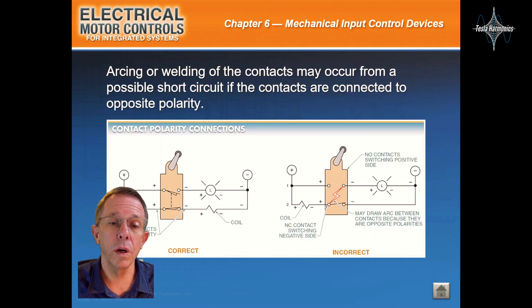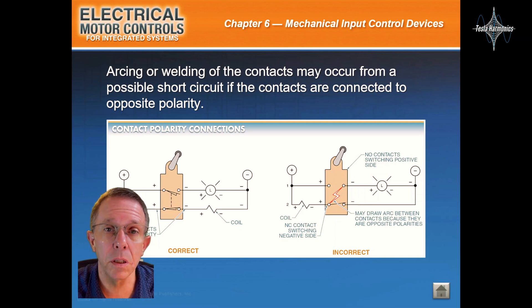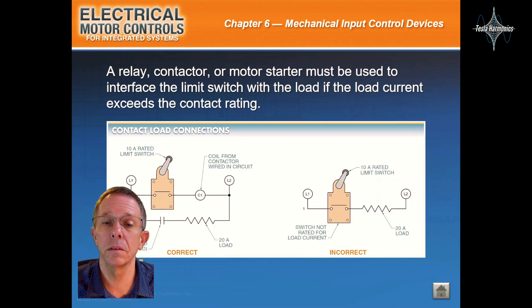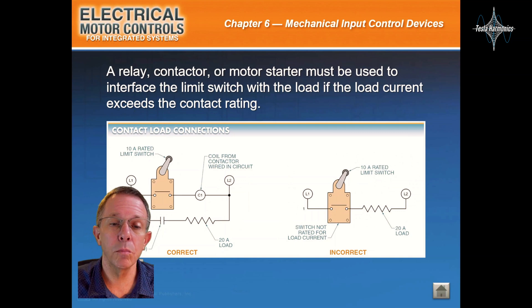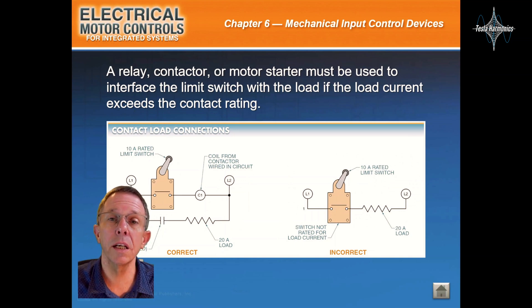Arcing or welding of the contacts may occur from a possible short circuit if the contacts are connected to the opposite polarity. A relay, contactor, or a motor starter must be used to interface the limit switch with the load if its load current exceeds the contact rating.